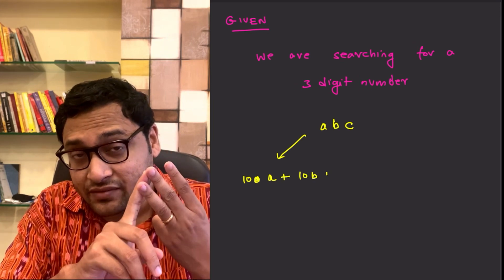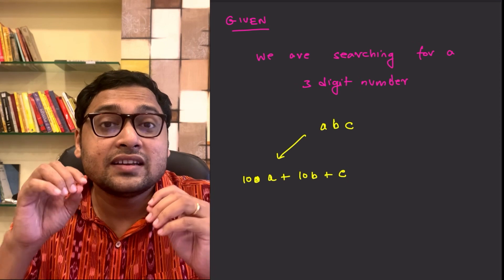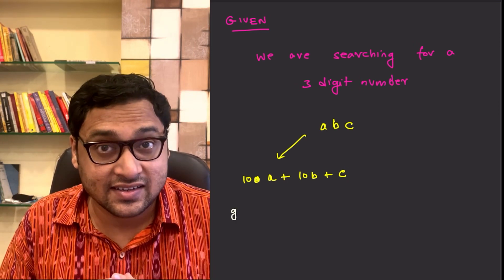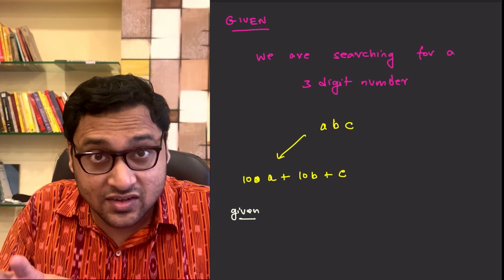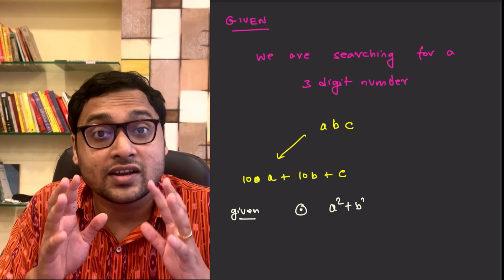Now, there are three things given. The first thing is that the square of the digits add up to 146. So, A square plus B square plus C square is equal to 146.